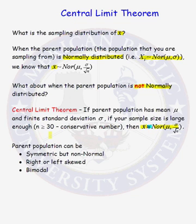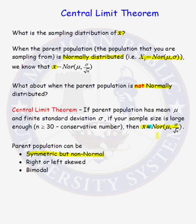Typically, 30 is a conservative number needed as a sample size in order for the Central Limit Theorem to apply. The more non-normal that our parent population is, the larger the sample size we need. If we had a symmetric but non-normal parent population, we would not need a sample size as large as 30. A much smaller sample size would be sufficient to guarantee that the sample mean would be approximately normally distributed.